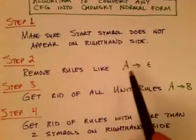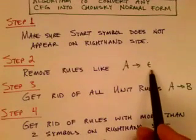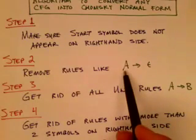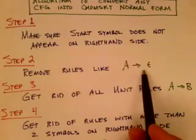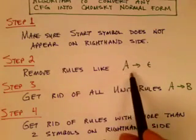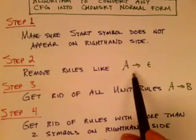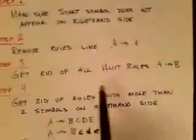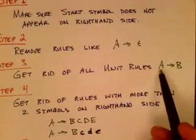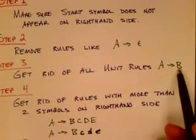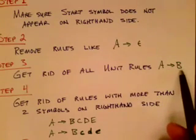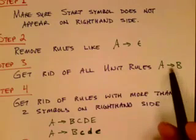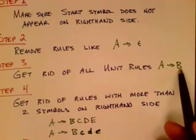The first step is to make sure that the start symbol does not appear on the right-hand side of any rule — we modify the grammar so that the start symbol appears only on the left-hand side. In Chomsky normal form, we're not allowed to have rules where a non-terminal goes to epsilon, unless that non-terminal is the start variable. So step two is to remove those epsilon rules.